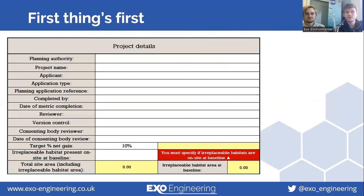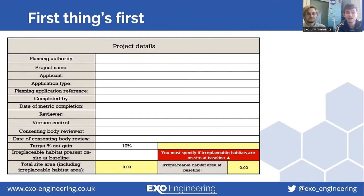Moving on to Metric 4 — when you first open the calculation tool, this is the page that you'll be greeted by. This must be filled out with all the relevant details of your project. You'll also notice that you must state if there are any irreplaceable habitats present on the site at the baseline, and I'll come back to this a little bit later on.